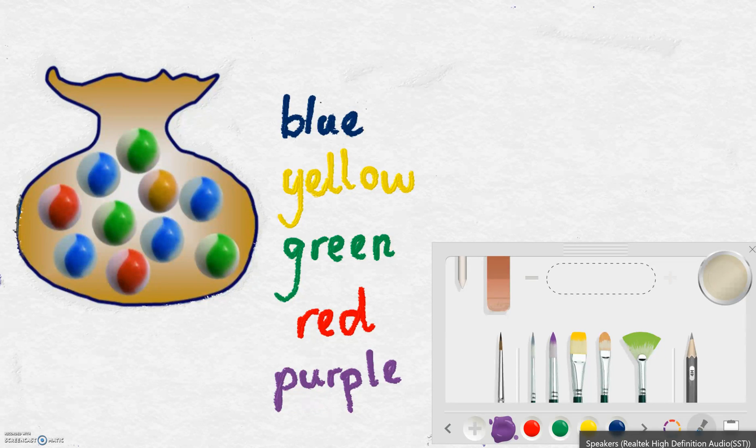What color marble am I least likely to pull out? Yellow. I have least chance of pulling out a yellow because there are less of them. Now we can express probability by using fractions. I'd like to explain that to you. So let's have a look at the blue marbles. How many blue marbles are there? Well, there are four.